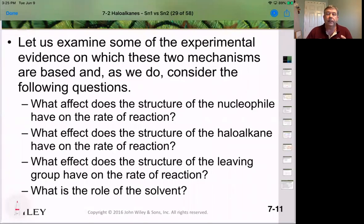So now what we're going to do in the next video is look at what evidence we have to consider that there are two different mechanisms going on. What effects the structure of the nucleophile has on the reaction rate, what the structure of the halo alkane has on the reaction rate, what effect the leaving group has, and finally, what effect the solvent might have on that reactive species.